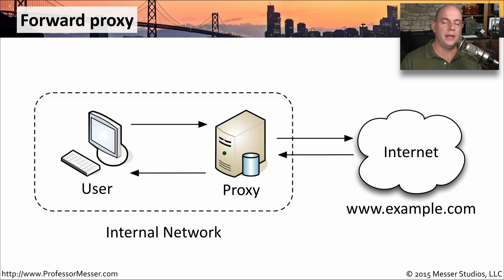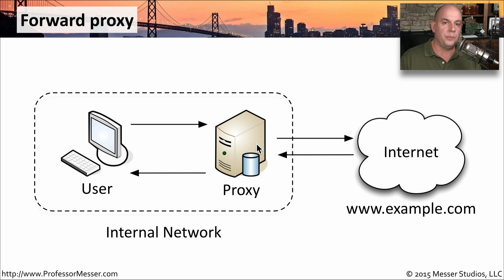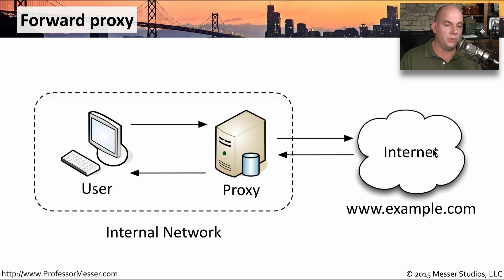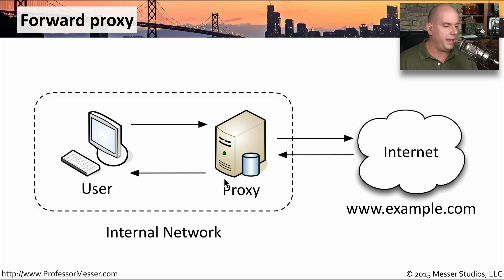In that example, we commonly see a forward proxy being used. This is usually where we'd have an internal network with a user and a proxy on the inside of our network, controlled by our network team or security team. The end user makes the request to the internet, it hits the proxy, the proxy makes the request directly out to the internet and gets the response, and once the proxy is sure that everything is OK, it sends that information down to the user.